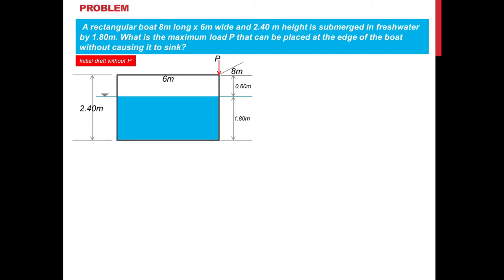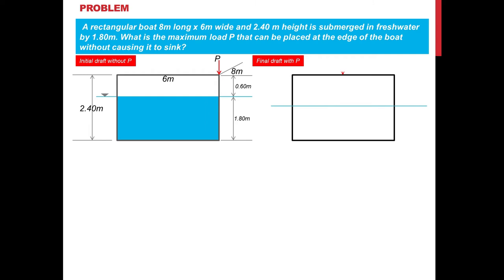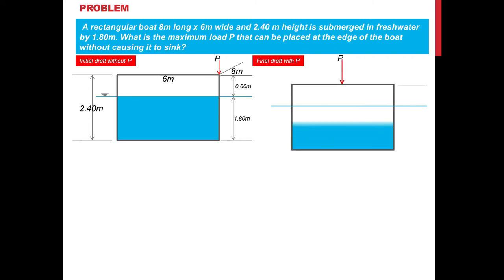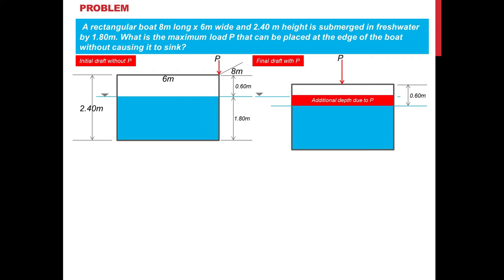With the initial draft without P established, applying P will press the block further down. There will be an additional depth due to load P, which we denote X. The exposed dimension becomes 0.6 minus X. When we tilt the boat, that dimension forms part of the triangle wedge. We coincide our liquid surface to one end — this is the critical condition where one side of the boat is submerged. When tilting, we always coincide the axis of symmetry to the liquid surface.